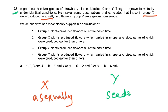Question 33: A gardener has two groups of strawberry plants labeled X and Y. They are grown to maturity under identical conditions. He makes some observations and concludes that those in group X were produced asexually. Those in group Y were produced from seeds.